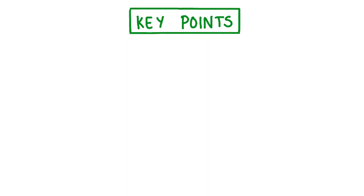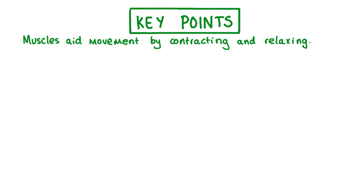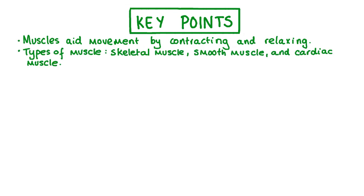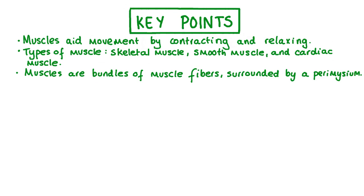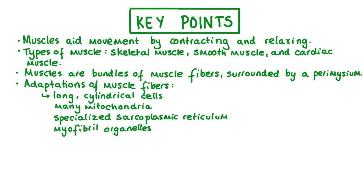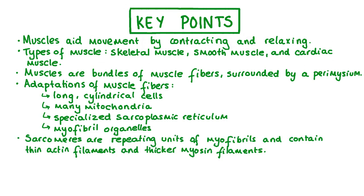Let's review the key points covered in this video. Muscles are structures in the body that aid movement by contracting and relaxing. Muscles can be voluntary skeletal muscles or involuntary smooth or cardiac muscles. A single muscle consists of many muscle fibre bundles, which are surrounded by a protective layer called the perimysium. Muscle fibres within these bundles are specialised and elongated cells with many mitochondria, a sarcoplasmic reticulum to store calcium ions, and myofibril organelles specialised for muscular contraction. Myofibrils contain repeating units called sarcomeres, which in turn contain actin and myosin protein filaments.